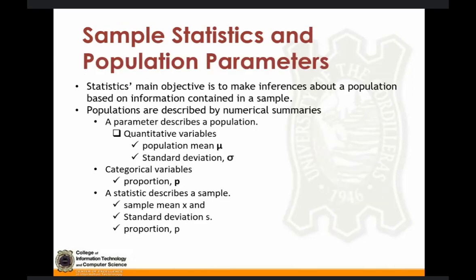Let's proceed with your sample statistics and population parameters. For quantitative variables, you have your population mean and your standard deviation. For categorical variables, you have your proportion. Statistics are described from samples, such as your sample mean, your standard deviation, and your proportion as well. The main objective of statistics is to make inferences about a population based on information contained in your sample.